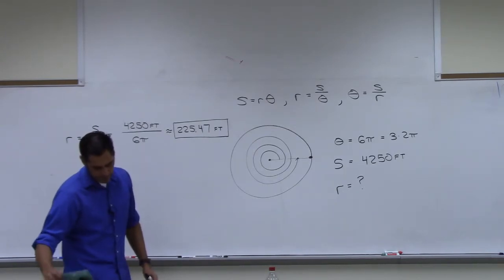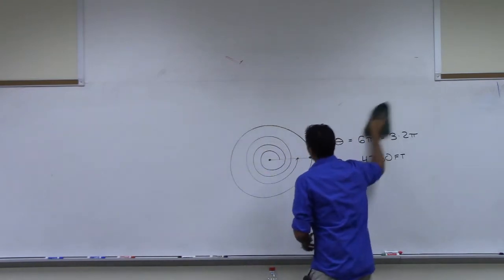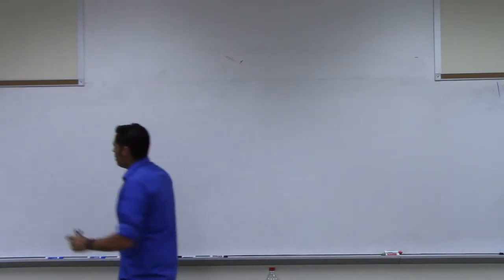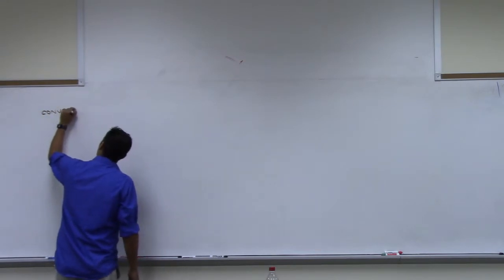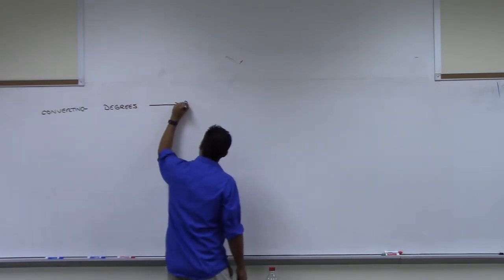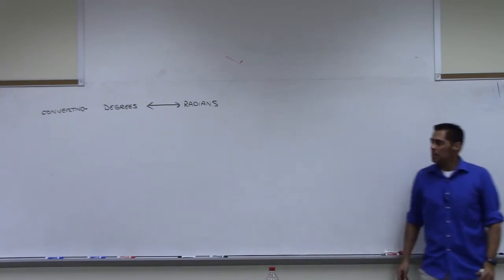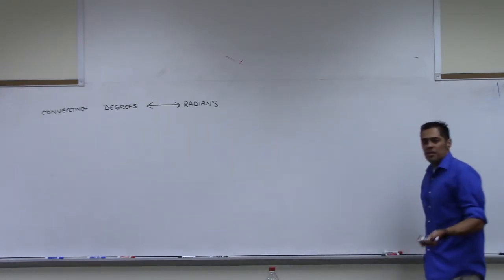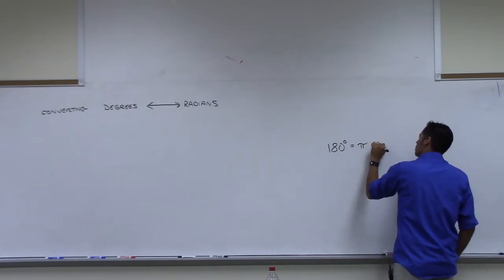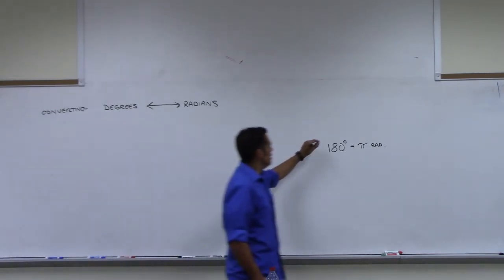Let's do some converting. Conversion from degrees to radians and back and forth. I think converting degrees to radians and back and forth is actually pretty straightforward. Converting degrees to radians and the other way around, radians to degrees, back and forth.